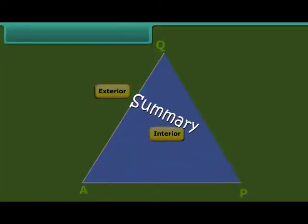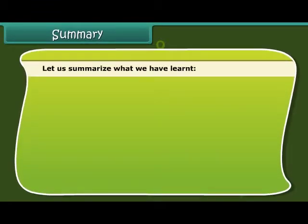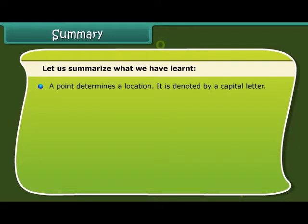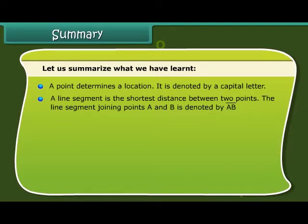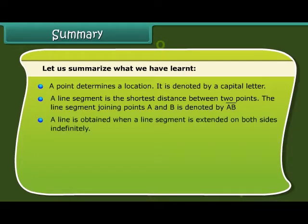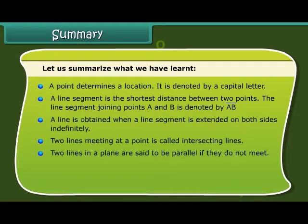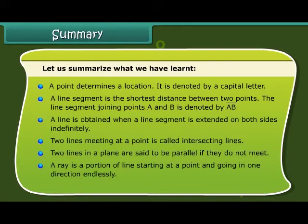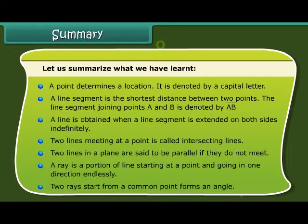Summary. Let us summarize what we have learnt. A point determines a location. It is denoted by a capital letter. A line segment is the shortest distance between two points. The line segment joining points A and B is denoted by AB. A line is obtained when a line segment is extended on both sides indefinitely. Two lines meeting at a point is called intersecting lines. Two lines in a plane are said to be parallel if they do not meet. A ray is a portion of line starting at a point and going in one direction endlessly. Two rays start from a common point forms an angle.